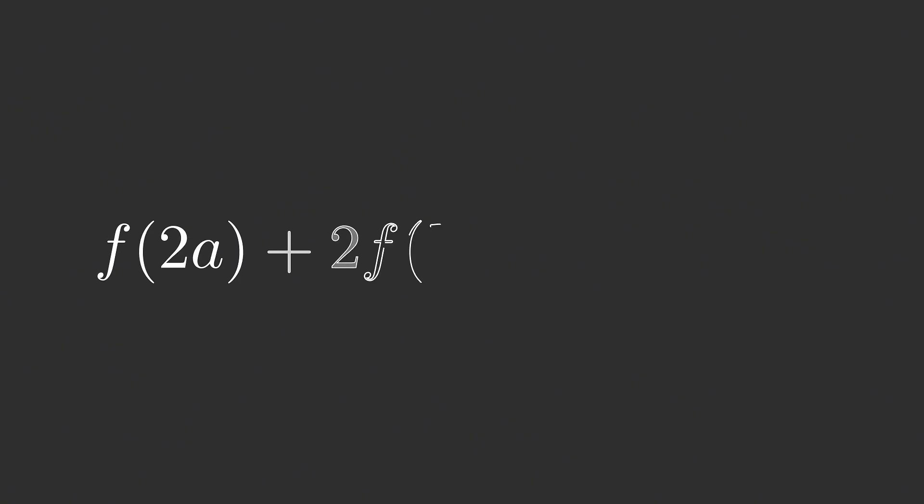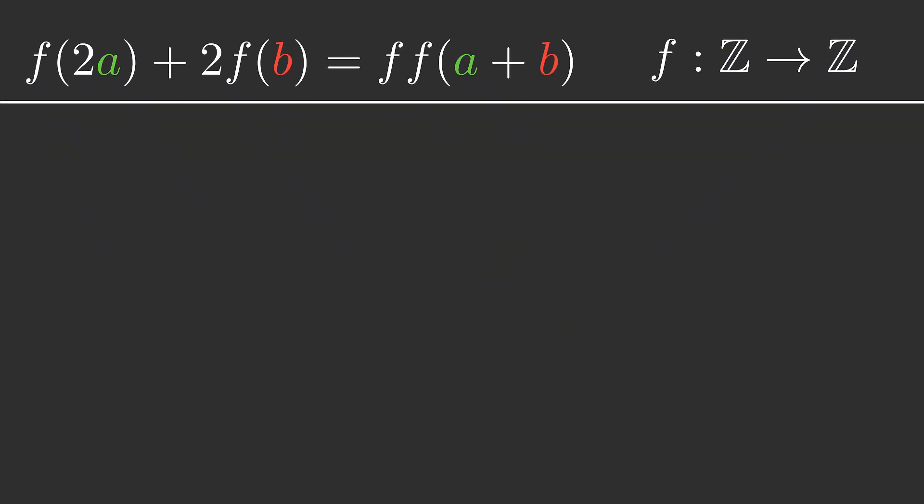So we're given this equation which describes the relationship the function has with itself and its composition. We have f of 2a plus 2f of b equals ff of a plus b, with that ff being the composition of f with itself. This function is defined as mapping integers to integers, so it can only take integers as inputs and will only produce integers as outputs.